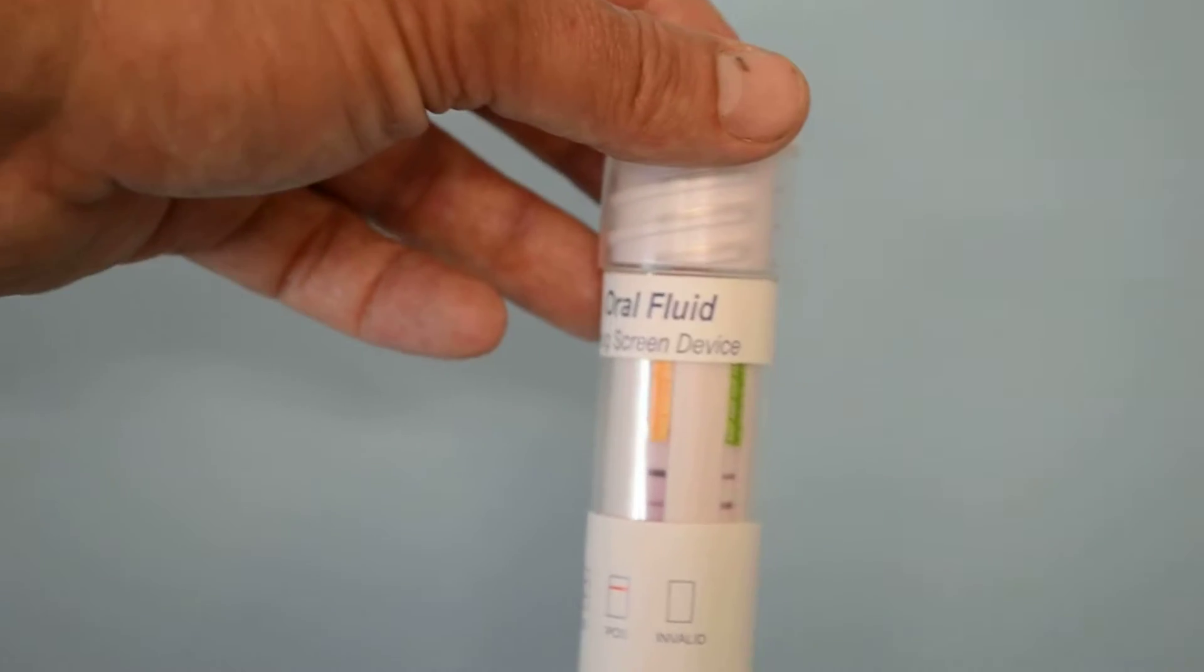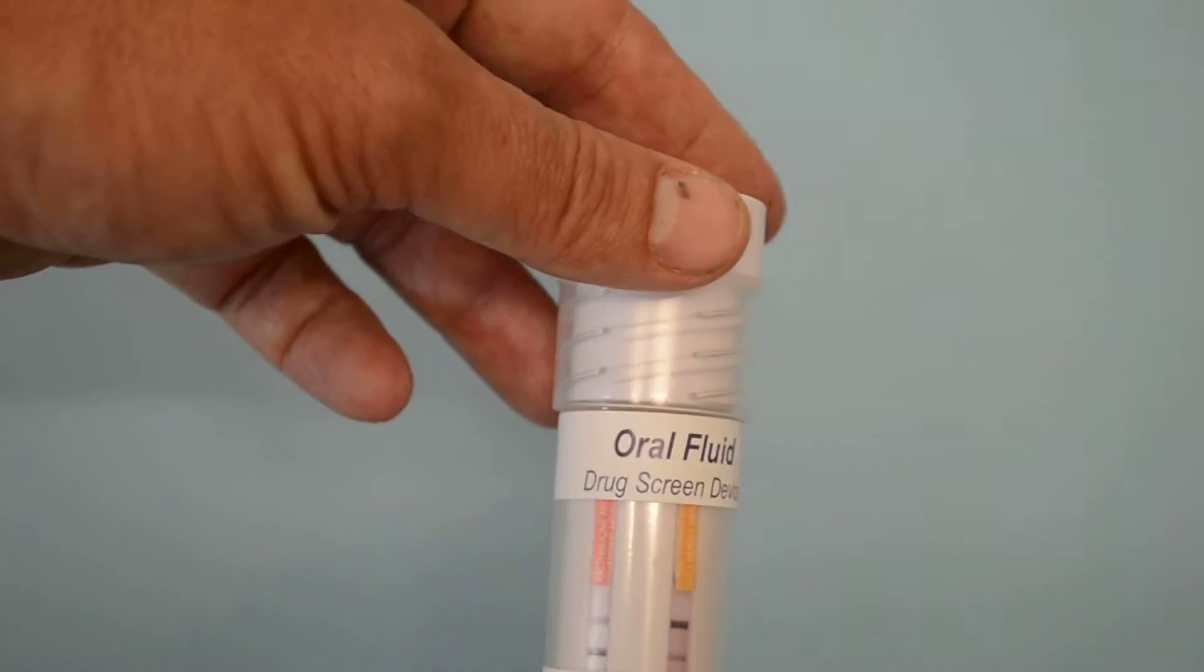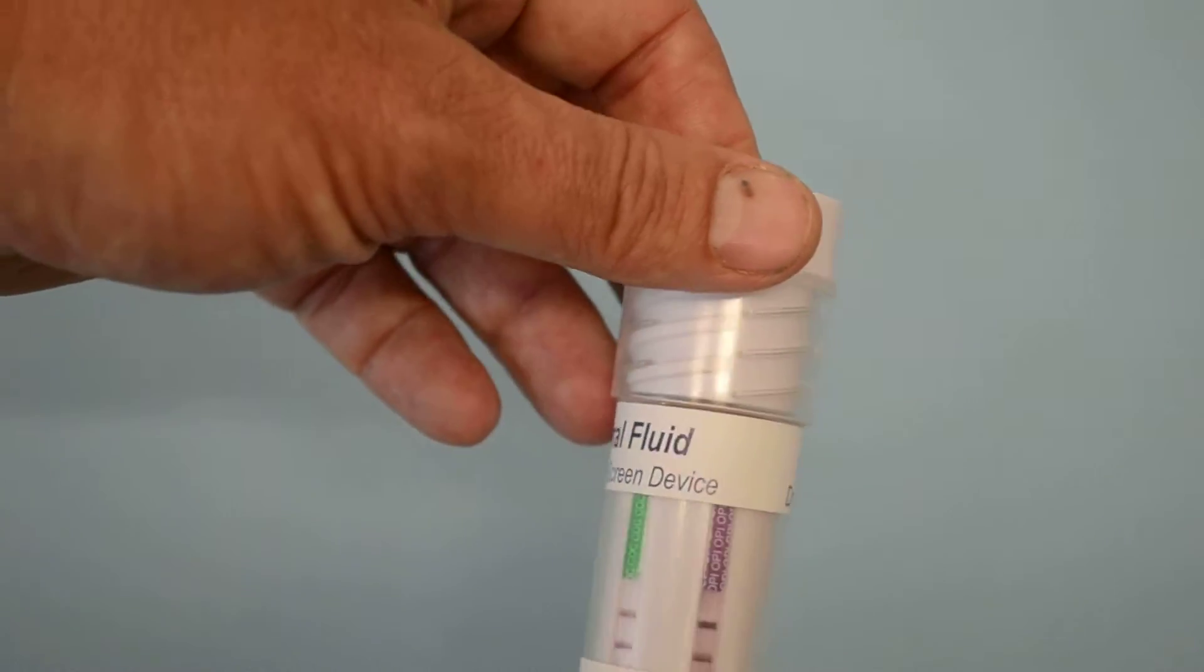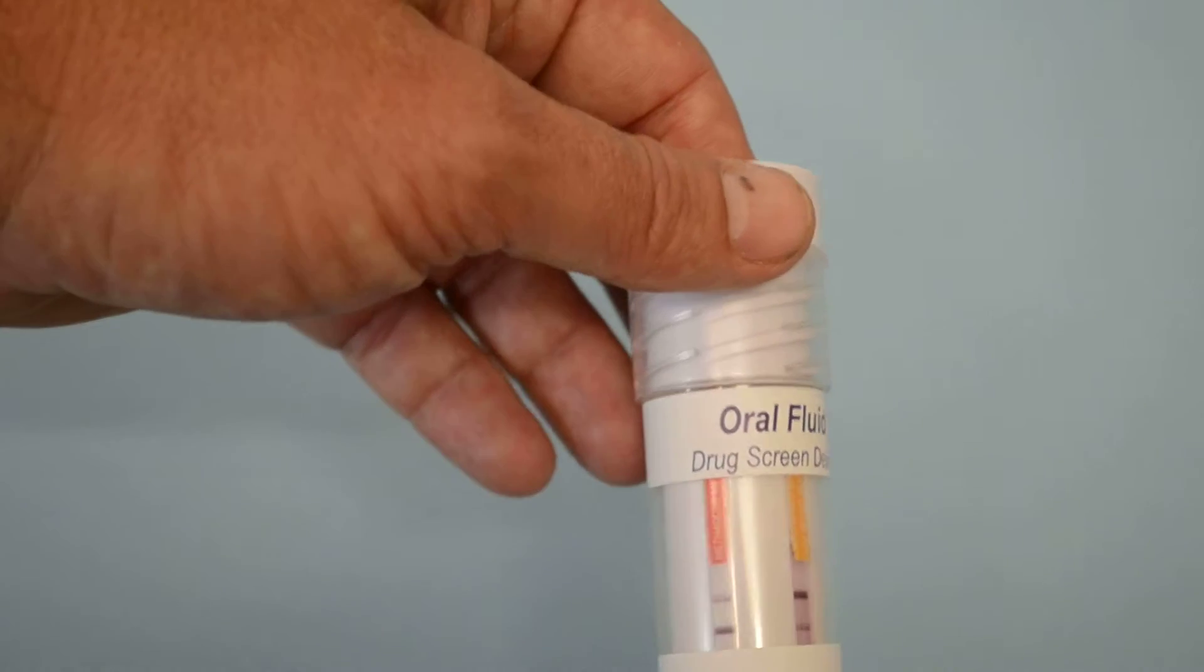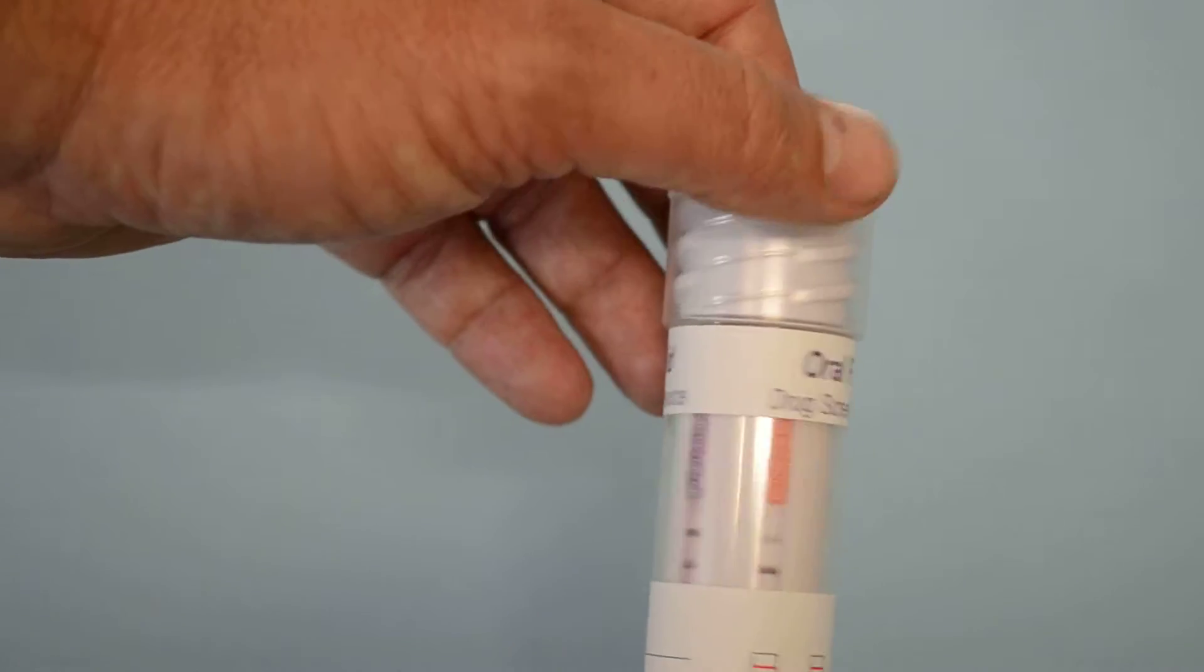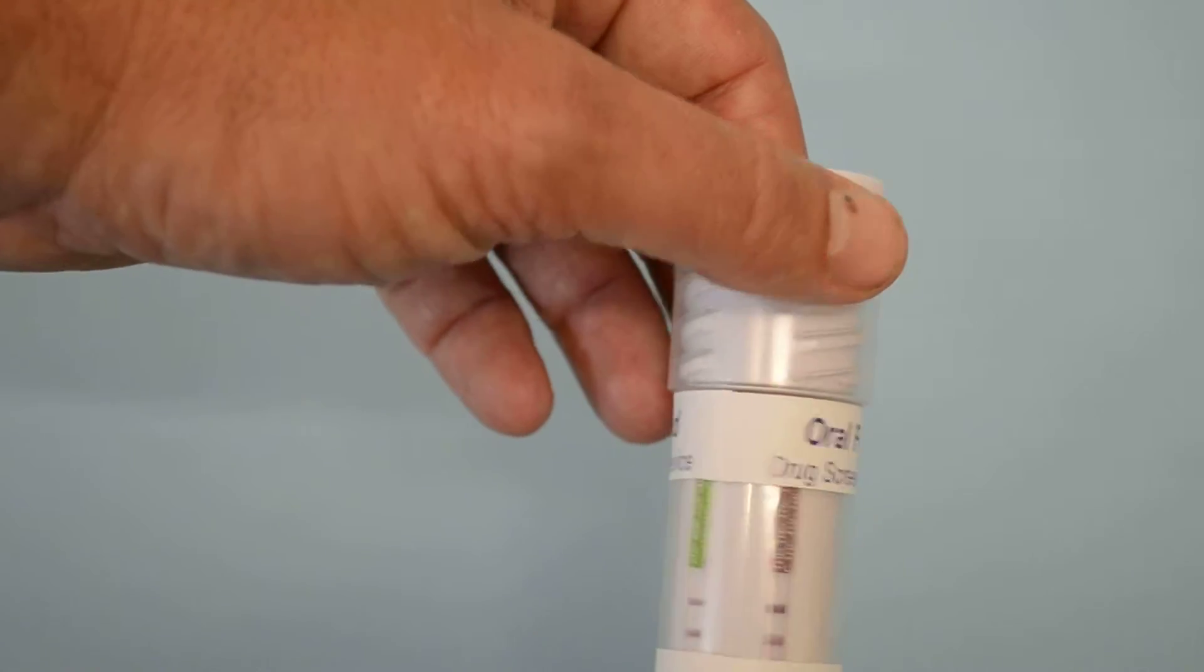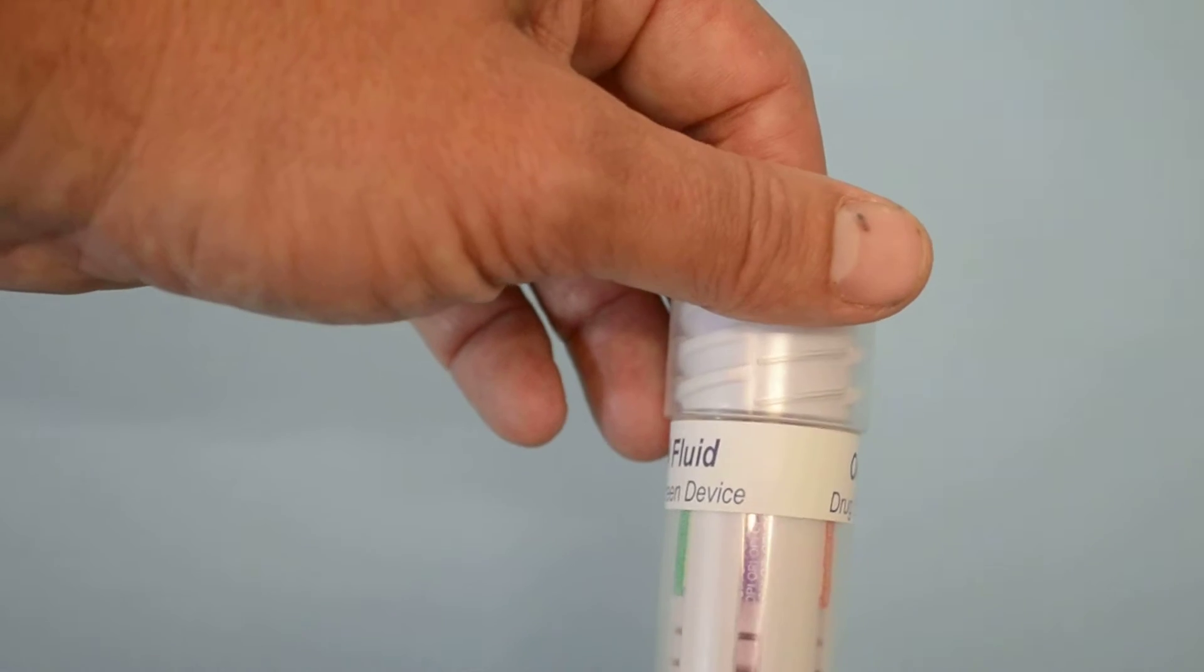Now we're going to demonstrate the results, reading this at between five and ten minutes. We've got all the control lines showing on this test. We've got clear test lines showing on all six membranes, so these are all negative results.